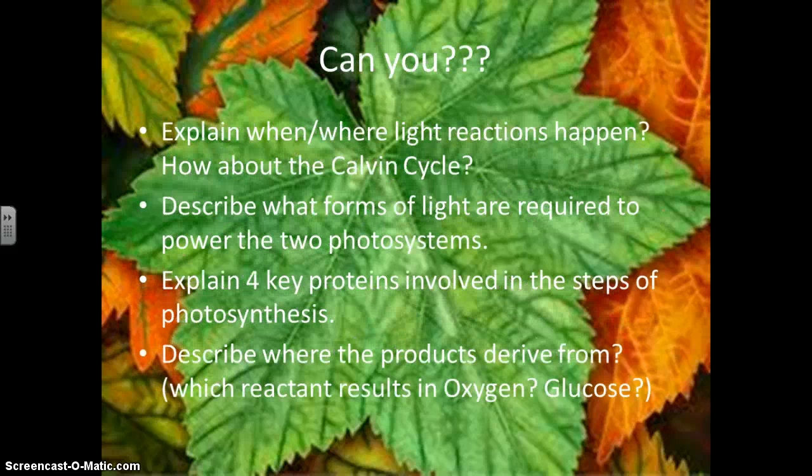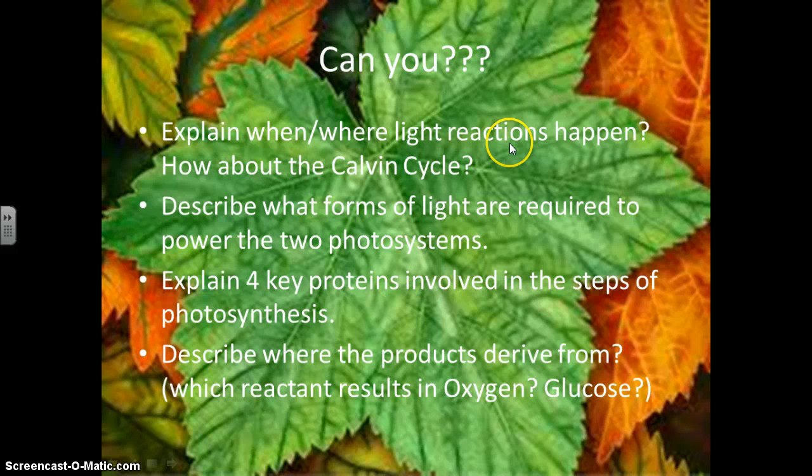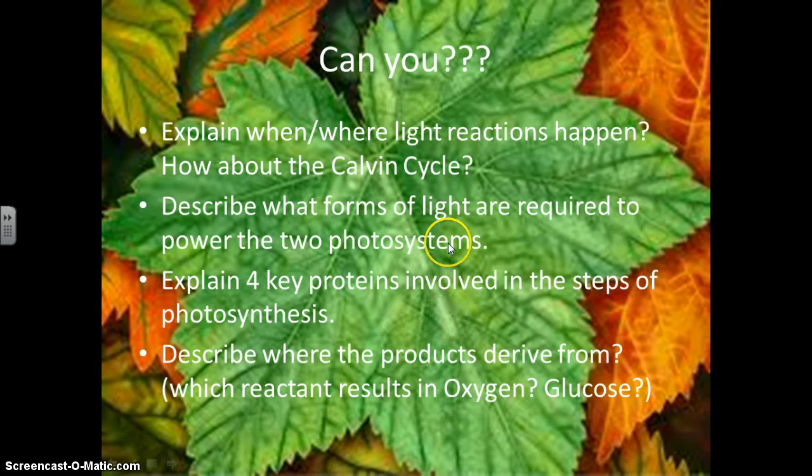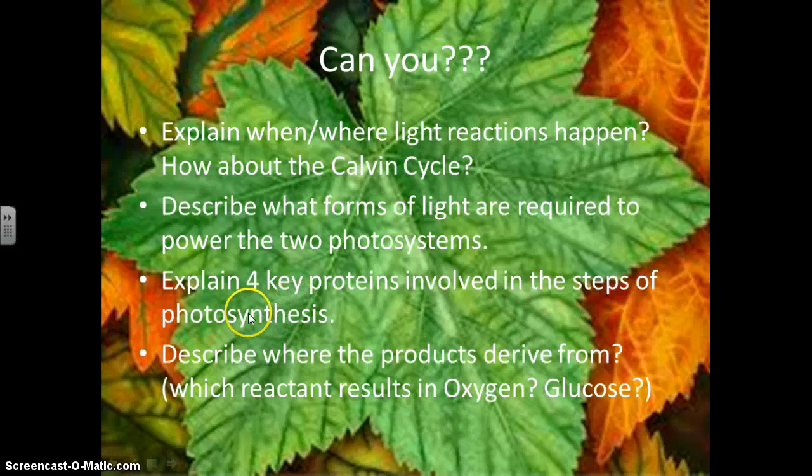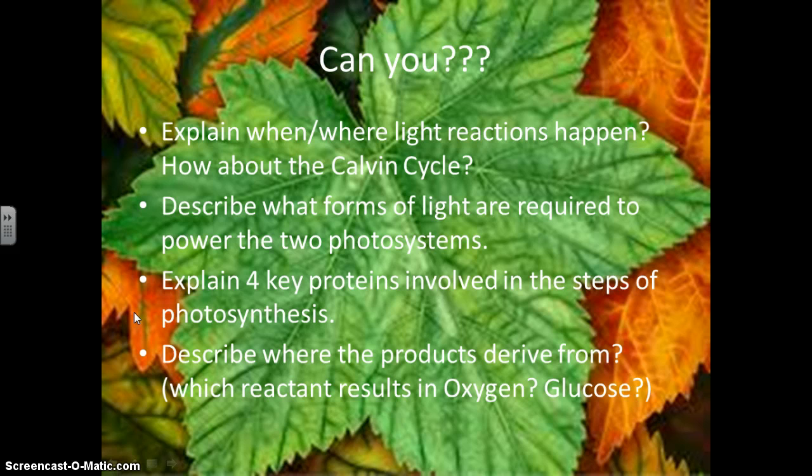So getting back to our original questions, can you tell me where and when and where the light reactions happen? How about the Calvin cycle? Hopefully you can go through all these questions and get to them. The one that I'm concerned about for you guys that I think you might get confused on, four key proteins here. Remember specialized proteins are enzymes. So there should be a number of different enzymes that you can specifically name off, or pigments that you can name off and you can say, okay, well that one's used there, that one's used there, that one's used there.